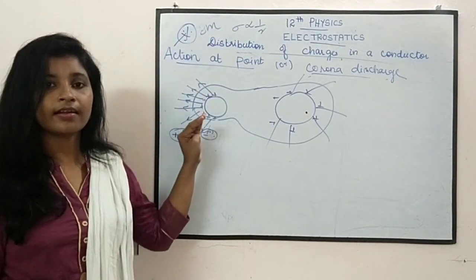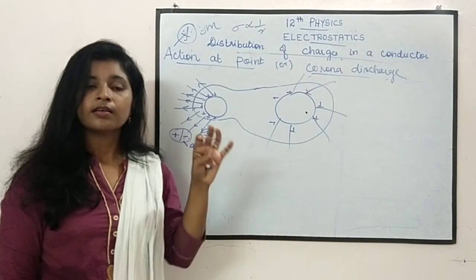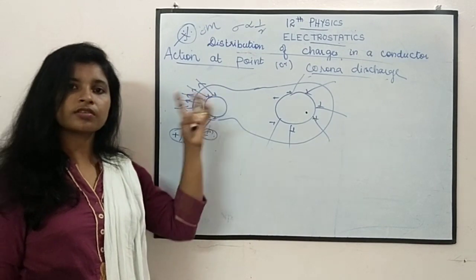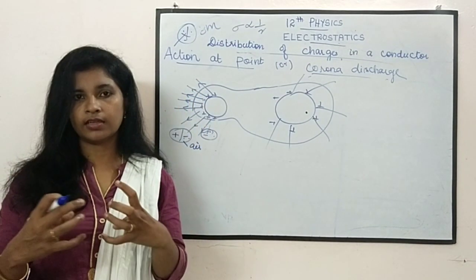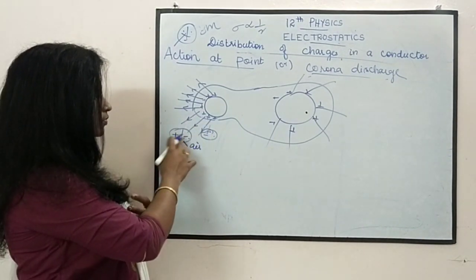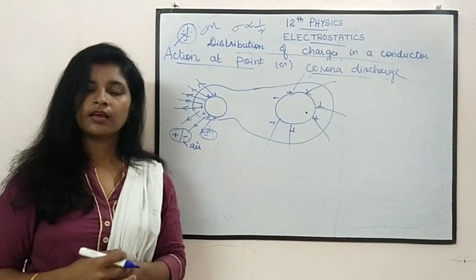Action at point occurs when the radius is very small, since the charge density is more, the electric field distribution is also more. So whenever something gets nearer to it, it will get ionized. Because of that, it is happening. Thank you for watching.